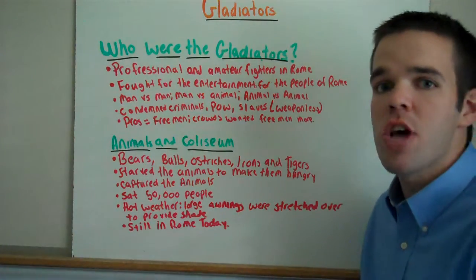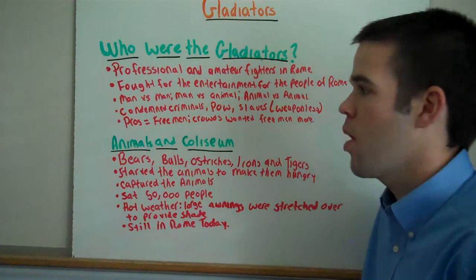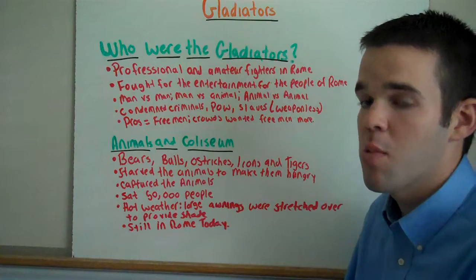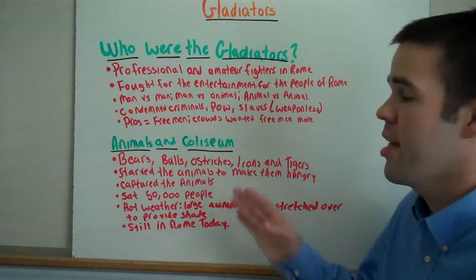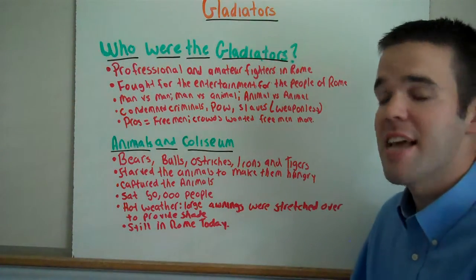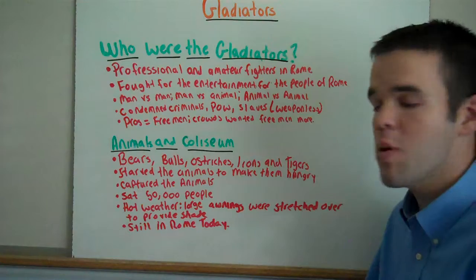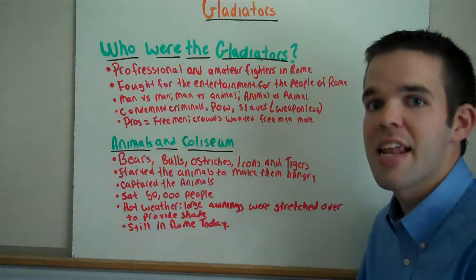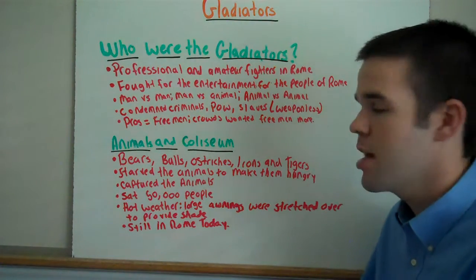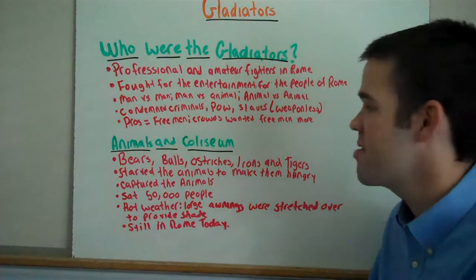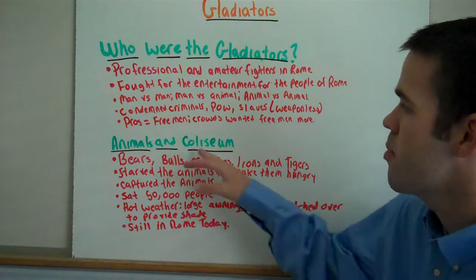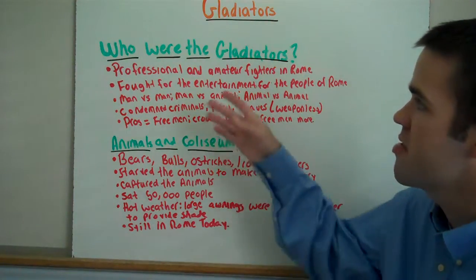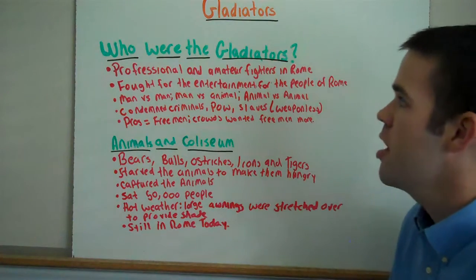Today we're going to cover gladiators. When you talk about ancient Rome, one of the number one things that people relate Rome with is gladiators. In today's lesson we're going to talk about who the gladiators were, the role animals had in gladiator fights, and we're going to wrap up with the Colosseum. Let's start with who were the gladiators.